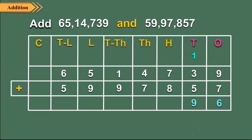Step 4: Now add the digits at the hundreds place. 7 hundreds plus 8 hundreds is equal to 15 hundreds, which is equal to 1 thousand plus 5 hundreds. So we write 5 in the hundreds column and carry forward 1 to the thousands place.